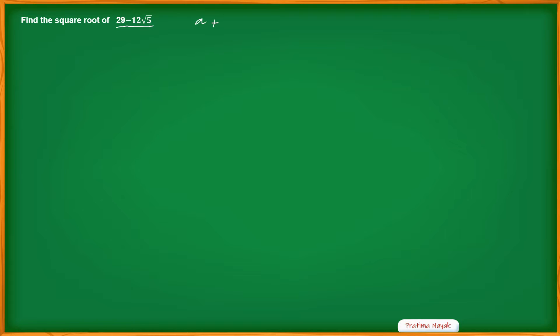Let us recall the square form. If it is (a + b) whole square, it will be a squared plus b squared plus 2ab. And if it is (a minus b) whole square, then b squared is again positive, but we get a negative term — it will be a squared plus b squared minus 2ab. For any integers a and b, a squared is always greater than or equal to zero.